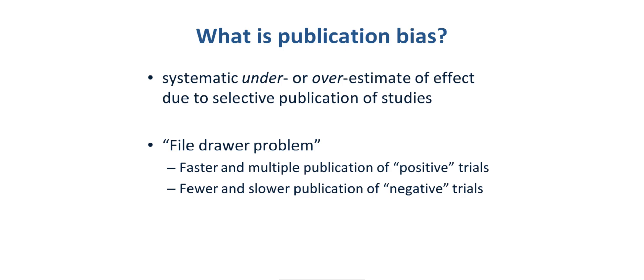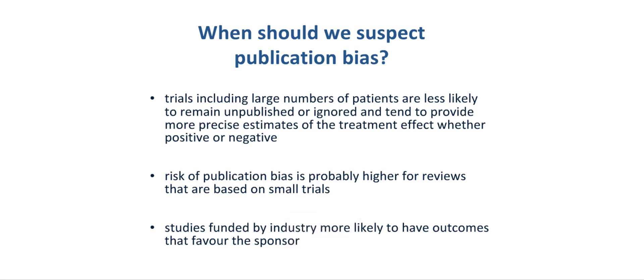Publication bias leads to a systematic under- or overestimate of the effect due to selective publication of studies. It is also known as a file-drawer problem. It results from fast and multiple publications of positive trials and fewer and slower publications of negative trials.